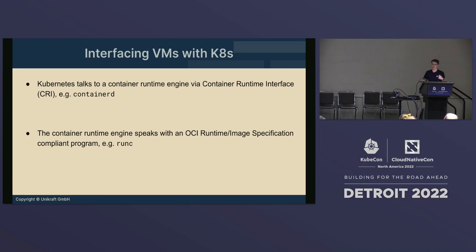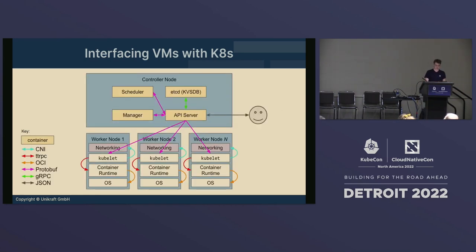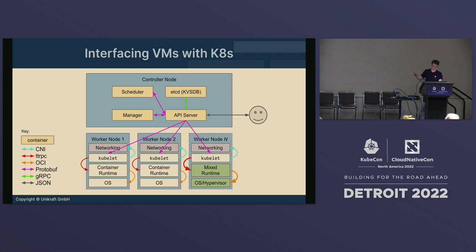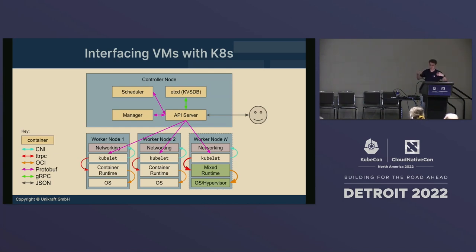At a very high level, this shows how we connect between a controller node and the physical or virtual worker nodes. What's important is the interaction between the container runtime and the host. The rest is just exposing the right APIs so that Kubernetes sees things as pods or services. But we have to manipulate the host itself to be able to run the unikernel — we have to install additional tools. This is really the only bit that needs to be changed in the whole model.